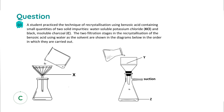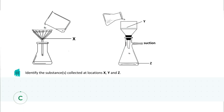Moving to Part C, we're looking at the recrystallization of benzoic acid. A student practiced this technique with a sample containing water-soluble potassium chloride and insoluble charcoal as impurities. Two filtration stages are shown in the diagrams. For Part i, we need to identify the substances that collect at locations X, Y, and Z.